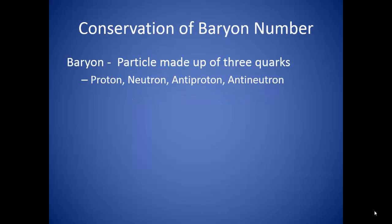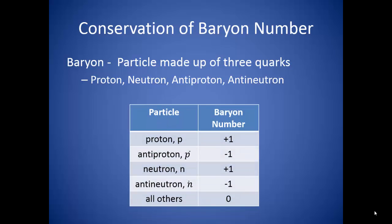The first of these conservation laws is the law of conservation of baryon number. A baryon is simply a particle that is made up of quarks. These include the protons, neutrons, antiprotons, and antineutrons. According to the law of conservation of baryon number, each particle is assigned a baryon number.